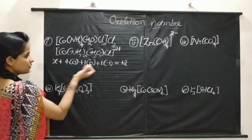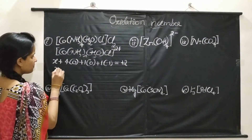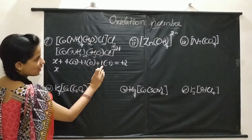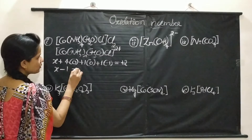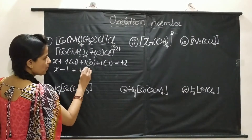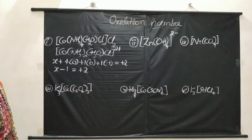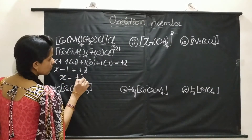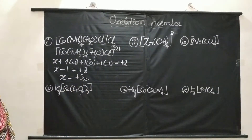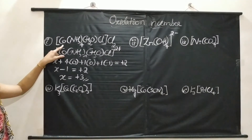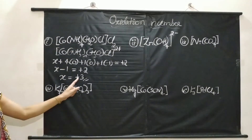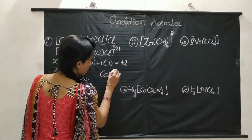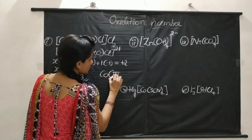Let me solve this equation. X plus 0 plus 0 plus 1 times (minus 1) equals plus 2, so X minus 1 equals plus 2, giving X equal to plus 3. The charge on the central metal atom cobalt in this complex will be plus 3, or Co(III).